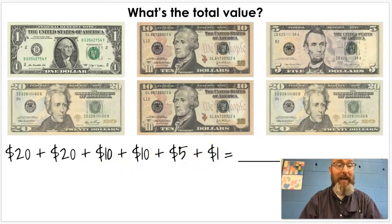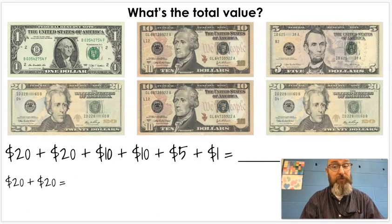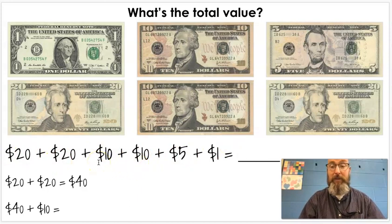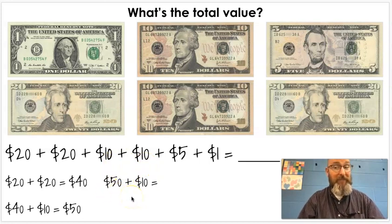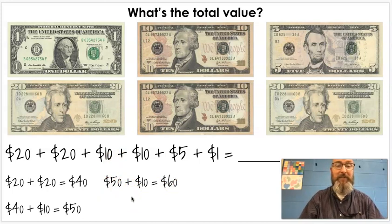We're going to add our two twenties first. We know that 2 + 2 = 4, so $20 + $20 must be forty. So, that takes care of those two. Next, we're going to add our next ten. $40 + $10. We know that's just counting by tens. What comes after forty if we're counting by tens? Fifty, that's right. Then we're going to add another ten. $50 + $10, what would it be? Sixty, that's correct.